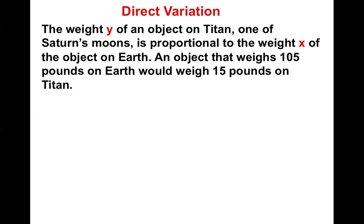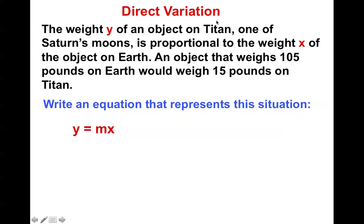We can even do this without graphing. The weight y of an object on Titan, one of Saturn's moons, is proportional to the weight x of an object on Earth. An object that weighs 105 pounds on Earth would weigh 15 pounds on Titan. Write an equation that represents this situation. Well, since I know I have y equals mx, and I know that y is Titan's weight, then 15 pounds would go in for y. And since x is the weight of an object on Earth, then 105 would go in for x.